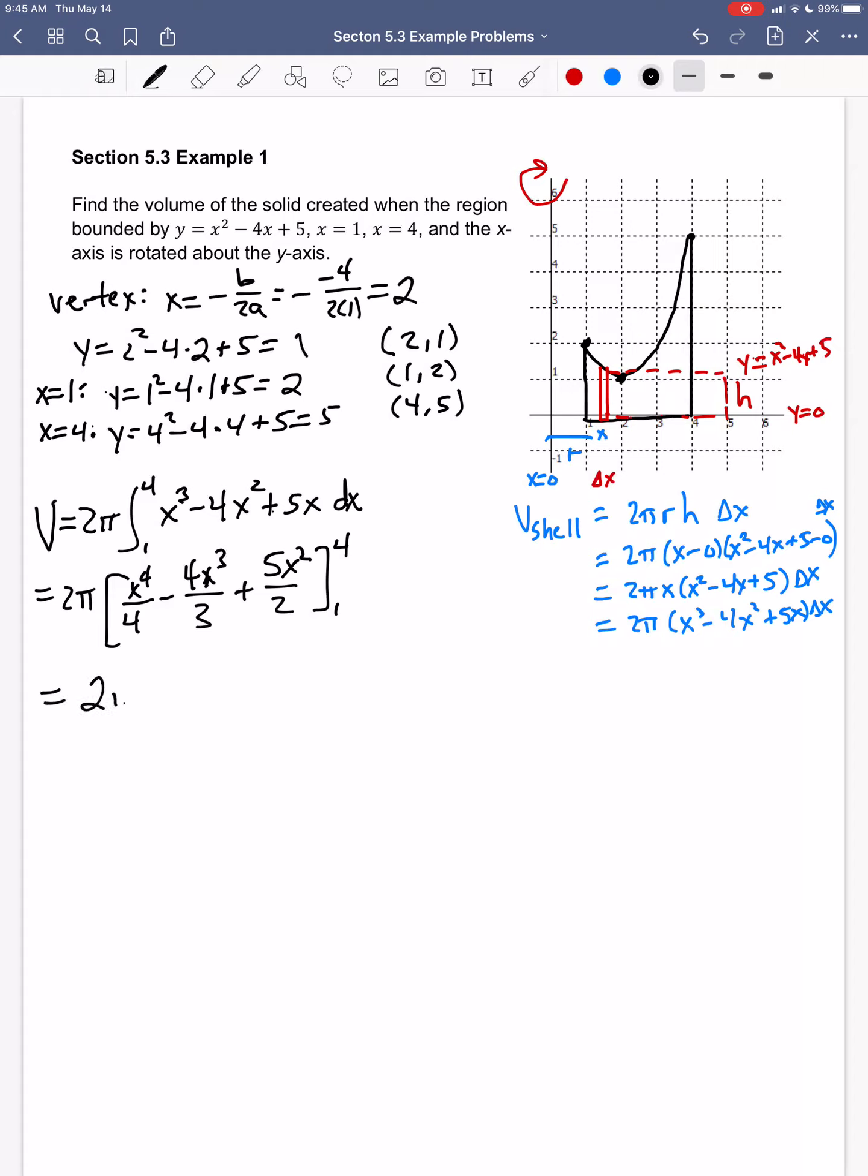Now I'm going to plug in 4. So I get 4 to the fourth over 4 minus 4 times 4 cubed over 3 plus 5 times 4 squared over 2, and then minus: 1 to the fourth over 4 minus 4 times 1 to the third over 3 plus 5 times 1 squared over 2.